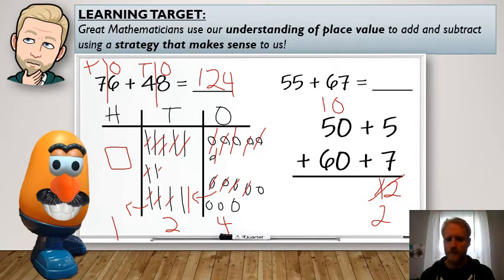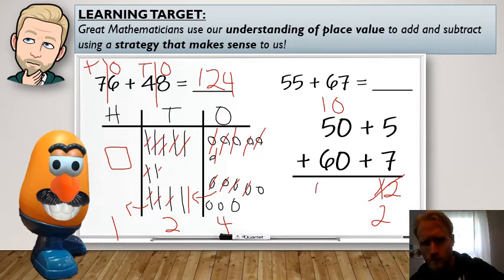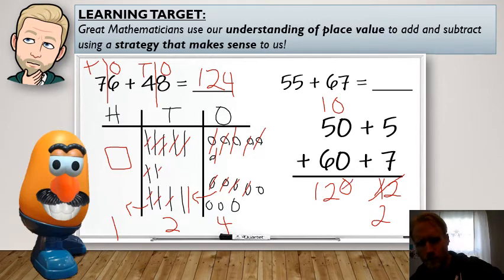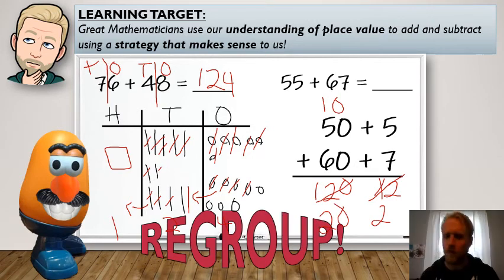All right. So then 10 plus 50, excuse me. 10 plus 50, I know it's 60 because 10 more than 50. I'm counting by tens. So 60 plus 60. 60 plus 60 would be 120. 120. Well, that doesn't seem right. That's not usually what we would see in the tens place. So again, we can regroup.